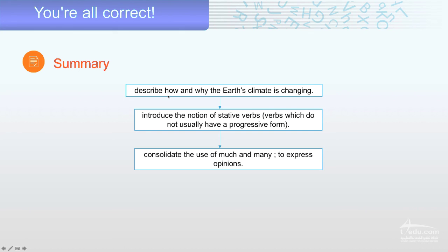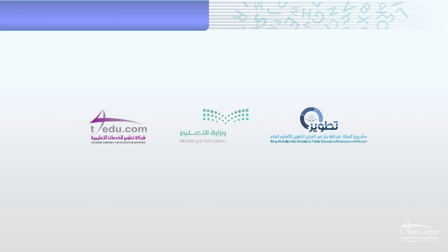Then we describe and listen. How and why the earth's climate is changing. Don't forget the heat escape. We introduce the notion of stative verbs, verbs which do not usually have a progressive form. It means like a concept or idea of stative verbs. We consolidate the use of much and many to express opinions. I hope you enjoy our lesson today. Very important. Let's see you next class. Goodbye.